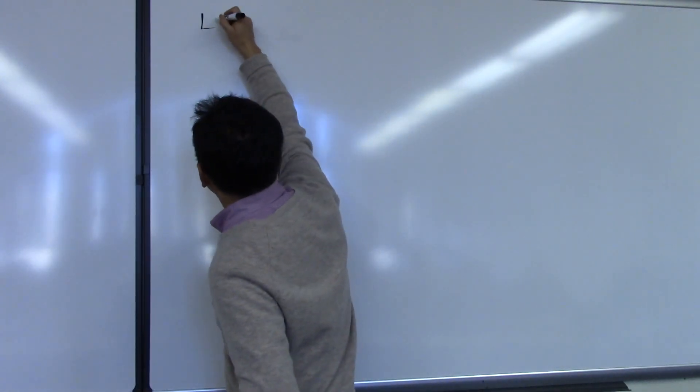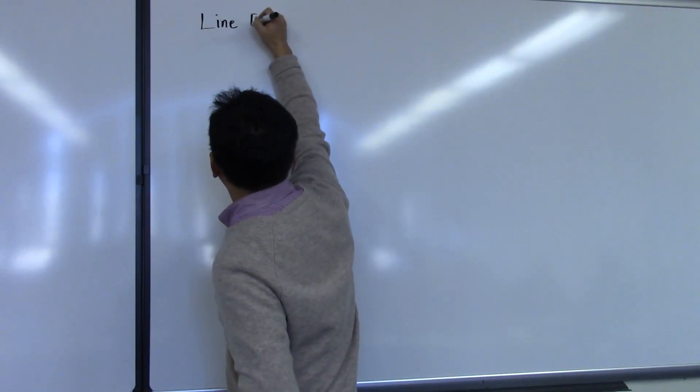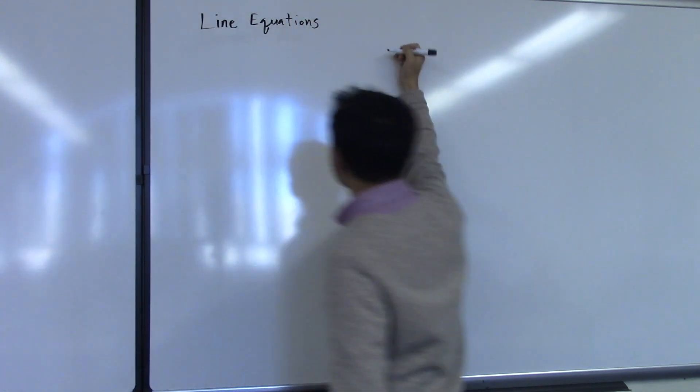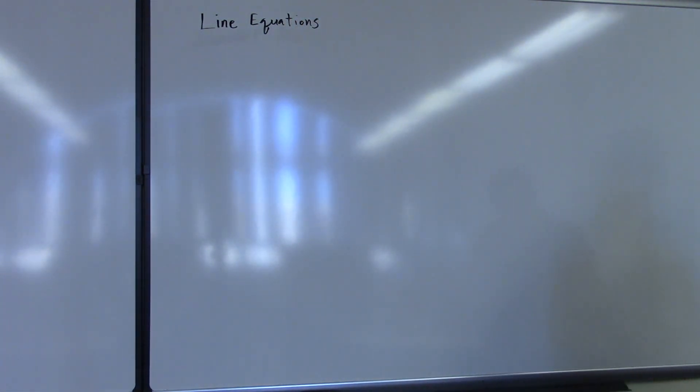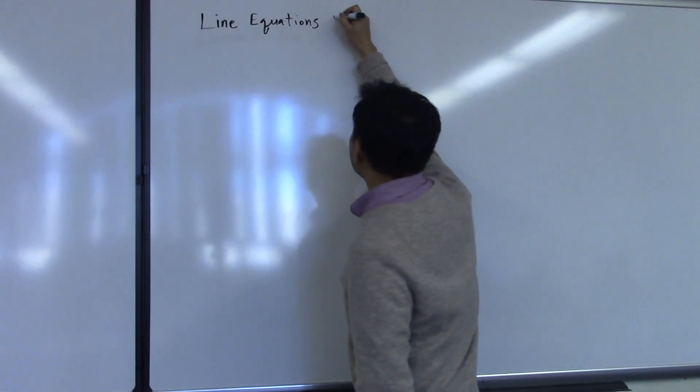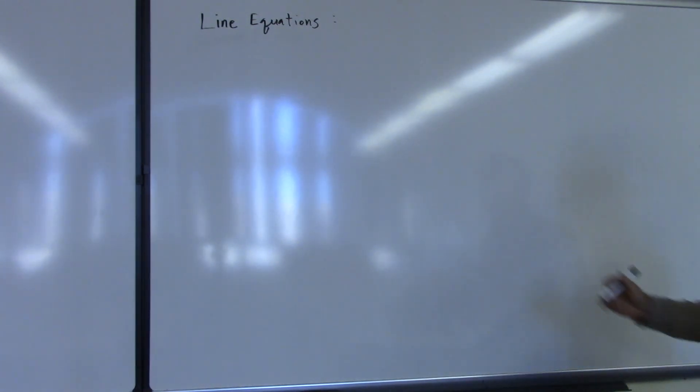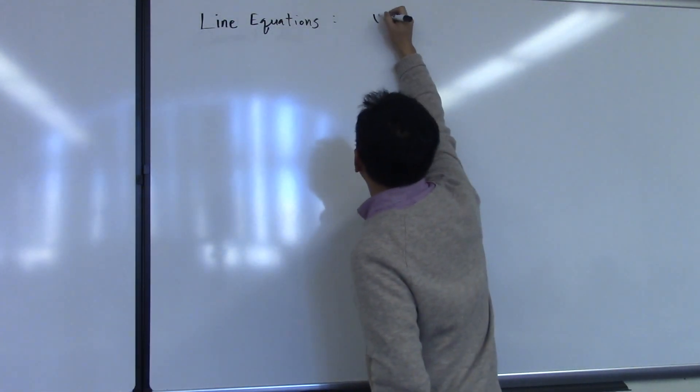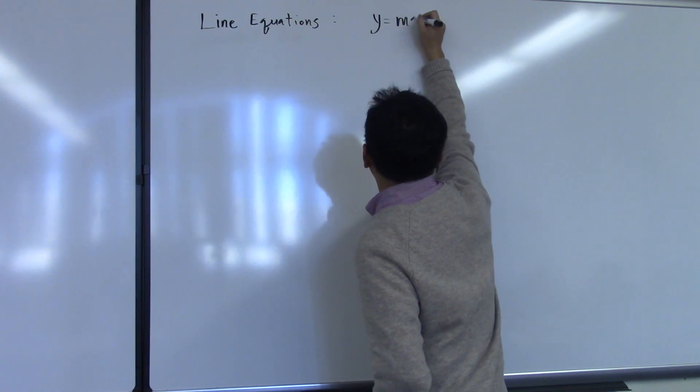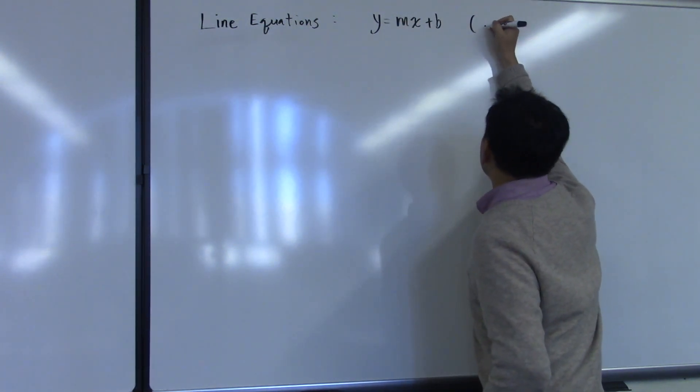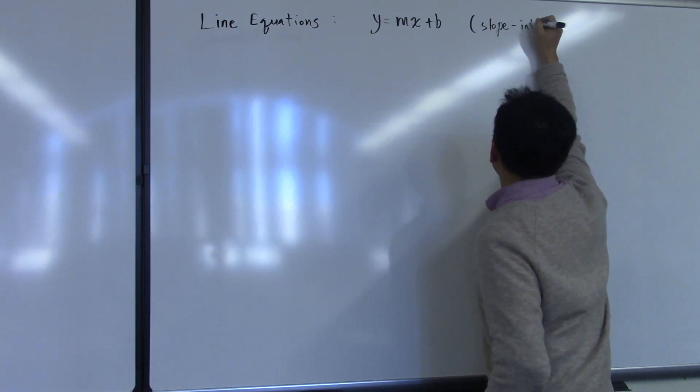Let's first try the line equations. There are two types of line equations. One is y equals mx plus b, which we call the slope-intercept form.